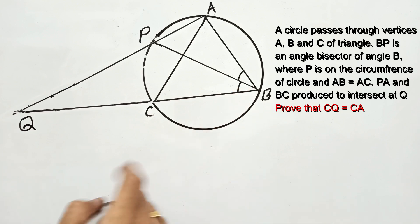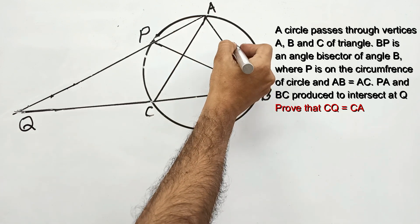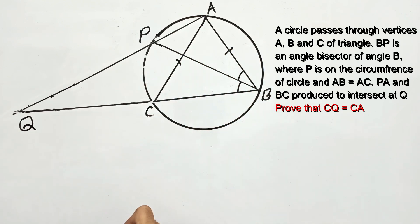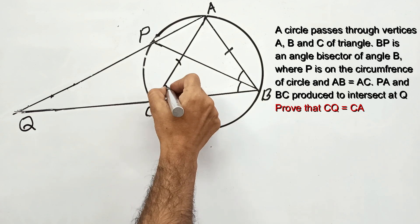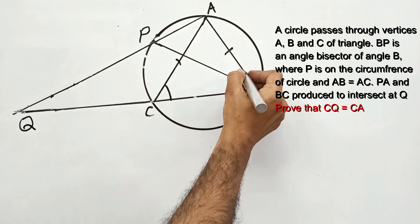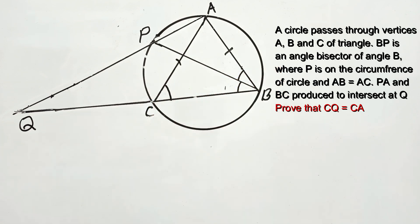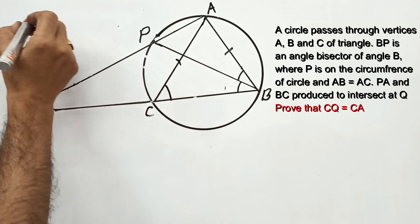One more piece of information is given in the question: AB is equal to AC. These two sides are equal, which means this angle and this angle are equal. We have to prove that CQ is equal to CA.